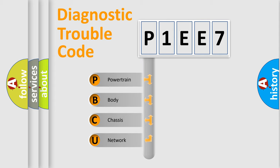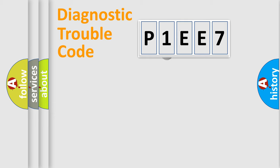We divide the electric system of automobile into four basic units: powertrain, body, chassis, and network. This distribution is defined in the first character code.